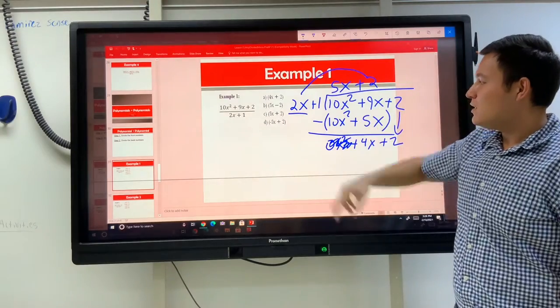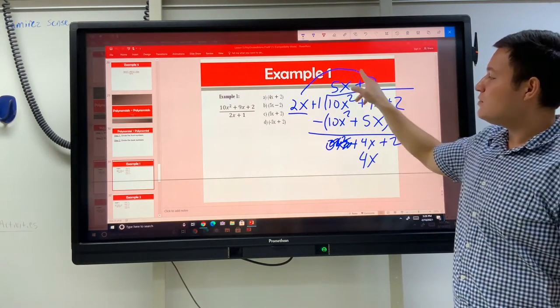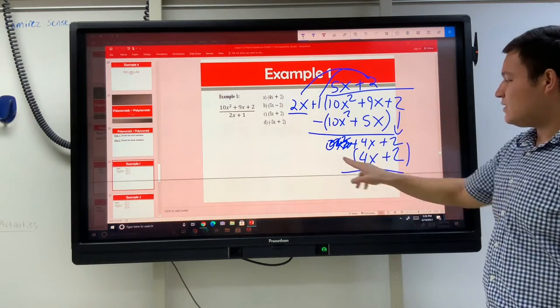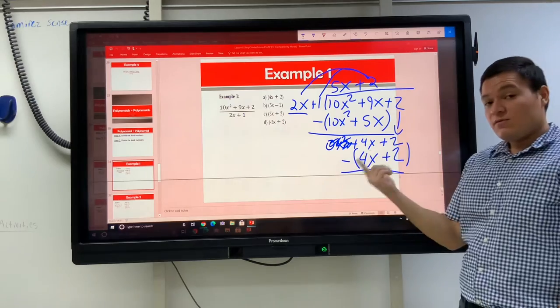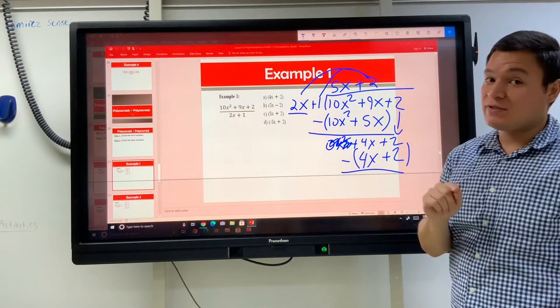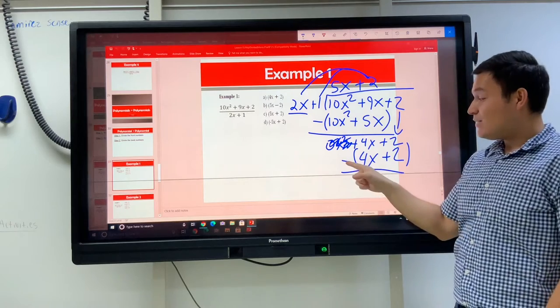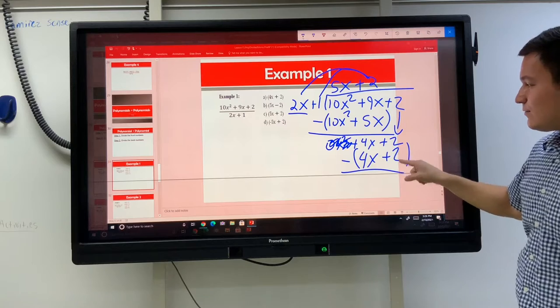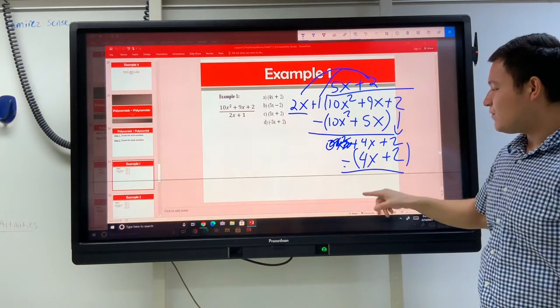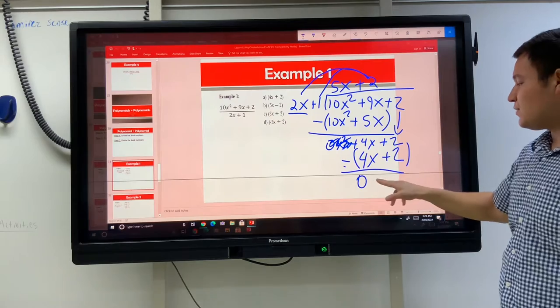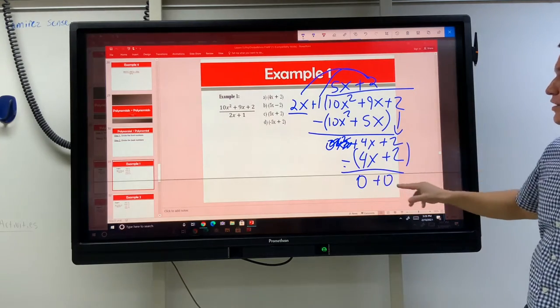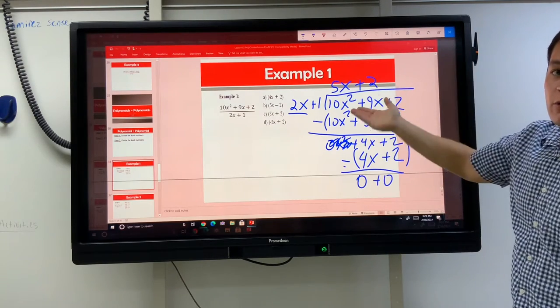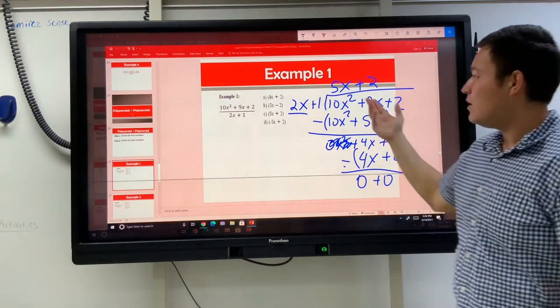Then, we do 2 times 2x makes 4x. 2 times 1 makes a plus 2. We're going to throw those in parentheses and subtract them. The reason why we put that parentheses there is because you're going to forget, I promise you, most of you are going to forget, that this minus sign is not only going to this first one, but we are also subtracting this second one. So, we have 4x minus 4x. That's 0. 2 minus 2 is also 0. That means we have no remainder. And, what is on top of this division symbol is our quotient, which is the answer. 5x plus 2.